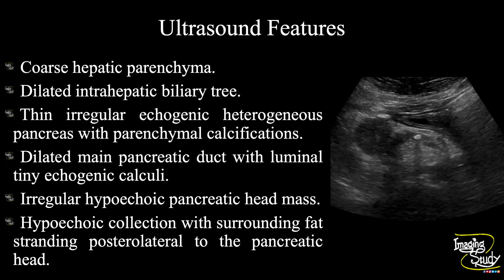In summary: the hepatic parenchymal echotexture is coarse and the intrahepatic biliary tree is dilated. The pancreas is thin and irregular with echogenic heterogeneous parenchyma and multiple tiny echogenic foci indicating parenchymal calcifications. The main pancreatic duct is dilated with at least two hyperechogenic structures casting posterior acoustic shadows within the lumen. There is an irregular hypoechoic mass at the pancreatic head region, and an irregular hypoechoic collection with surrounding fat stranding posterolateral to the pancreatic head. These features suggest chronic liver disease with chronic pancreatitis with ductal calculi, pancreatic head mass, and adjacent inflammatory collection.